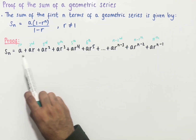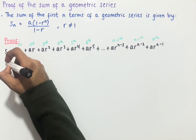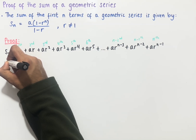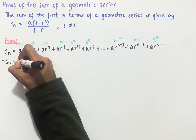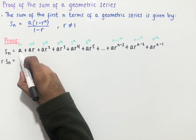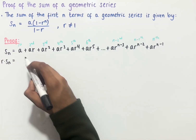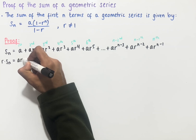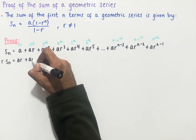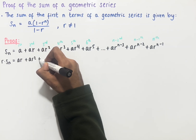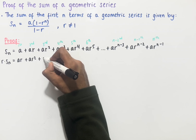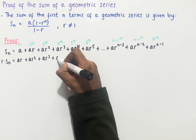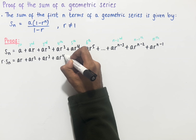We're now going to take this sum Sn and multiply it by r. Every single term gets multiplied by r, so a times r gives us ar, then ar times r is ar squared, then we have plus ar squared times r which is ar cubed. Carrying this on we end up with ar to the power of 4.